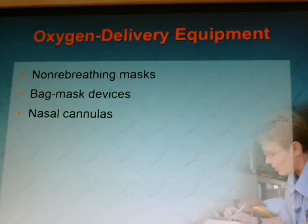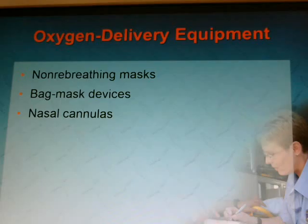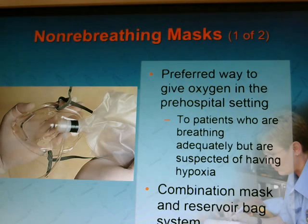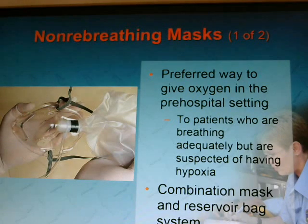Oxygen delivery equipment: we're going to talk about non-rebreathing masks, bag-mask devices, nasal cannulas, and a couple other pieces of equipment. The non-rebreathing mask is the preferred way to give oxygen in the pre-hospital setting to patients who are breathing adequately but experiencing hypoxia. It's a combination of a mask and a reservoir bag. When the bag is fully inflated, the patient is getting close to 100% oxygen. There's a small flap — when you breathe in it closes, and when you breathe out it opens to let the exhaled air out.